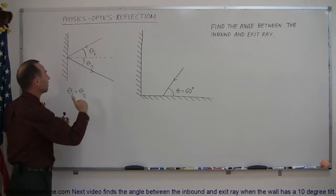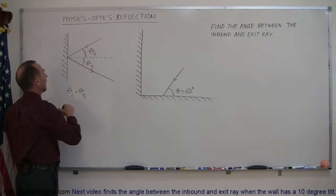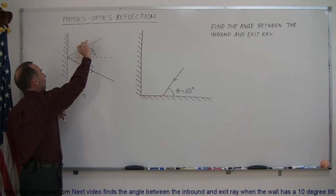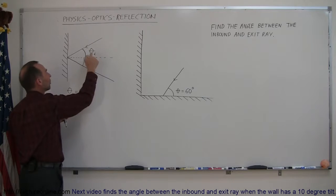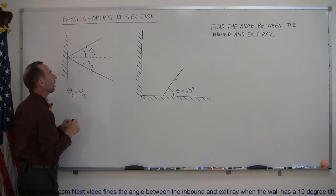Now the normal line is the imaginary line that's perpendicular to the surface, and the angle of incidence, which is the angle between the incoming ray and that normal line, is always equal to the angle of reflection, the theta sub r as we call it.